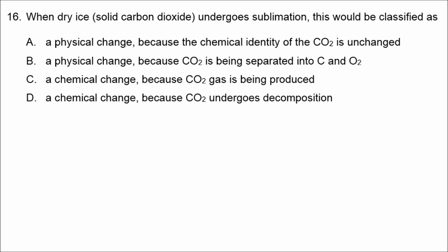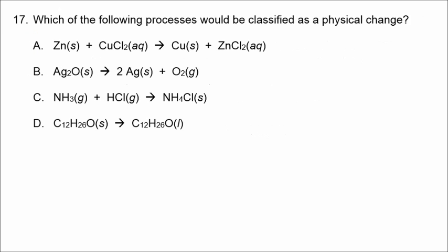Number sixteen involves a physical change. Sublimation is the change from a solid to a gas, so the correct answer is A — the chemical identity of CO2 is unchanged. Number seventeen: if it's a physical change, we're looking for a process in which the chemical formula is exactly the same on both sides of the arrow. The correct answer is D.